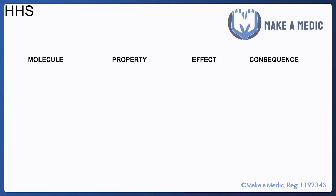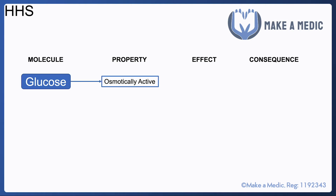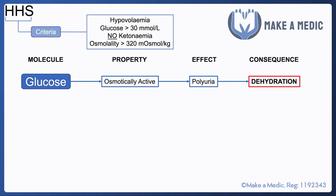In HHS, it is just glucose that's the problem. Glucose is osmotically active, which means it causes polyuria, and hence patients become very dehydrated.